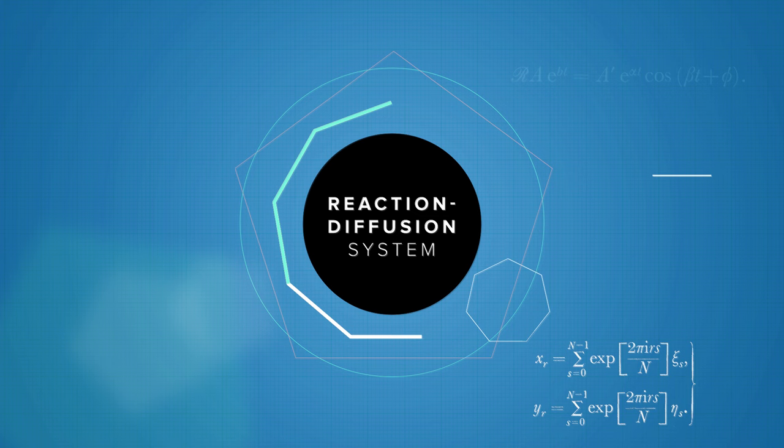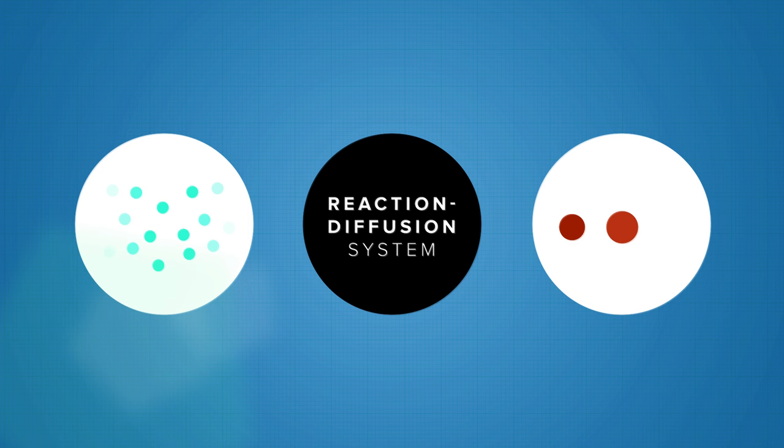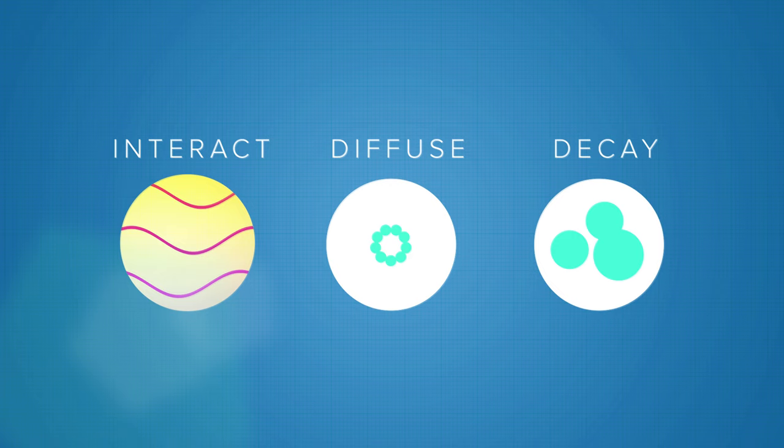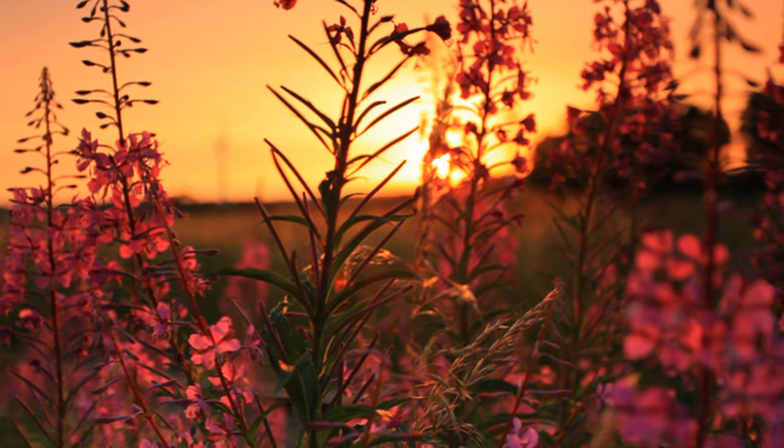Morphogens can really be any two chemical substances that work together to stop and start a reaction, like hormones, proteins, or acids. And changing the rate at which these components interact, diffuse, and decay determines the way those elemental patterns like waves, spots, and stripes appear. Today, many theoretical biologists and mathematicians believe that Turing's system could also be applied to the patterns found in vegetation on a landscape, weather systems, and even to the formation of galaxies.